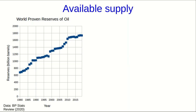One thing we need to discuss with any source of primary energy is the available supply. In the case of coal, the available supply is huge and we're not about to run out of it any time soon. Where much of the discussion in recent years has been is over the supply of oil, and so we're going to start there by looking at proven reserves.